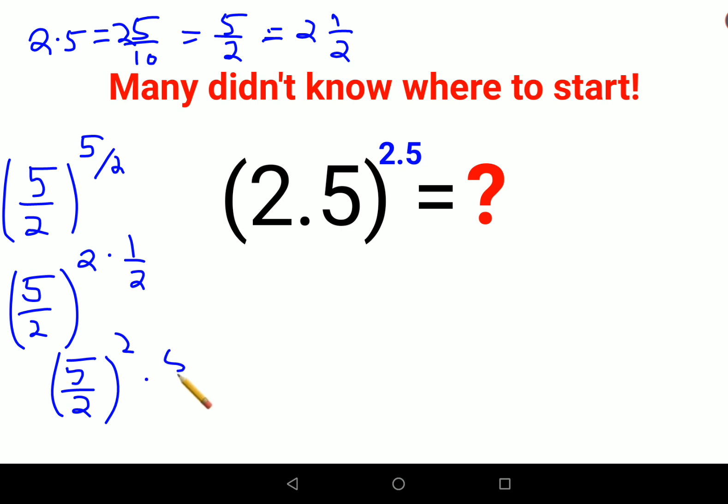Anything raised to half is a square root. First, let me finish this: 5 upon 2 raised to 2 is 25 upon 4, right?